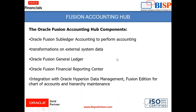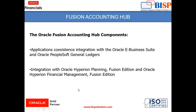Here are some components of Fusion Accounting Hub: Oracle Fusion Sub-Ledger Accounting to perform accounting transformation on external system data, Oracle Fusion General Ledger, Oracle Fusion Financial Reporting Center, integration with Oracle Hyperion Data Management Fusion Edition for charts of accounts and hierarchy maintenance. Next is application coexistence — integration with the Oracle E-Business Suite and Oracle PeopleSoft Journal Ledger.